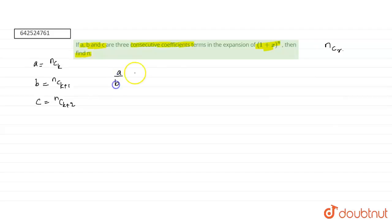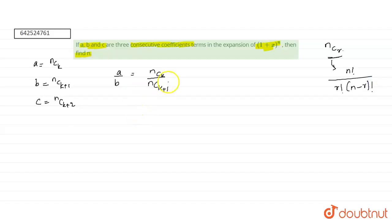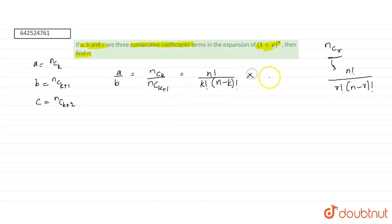Now, if we take a/b, that is nCk divided by nC(k+1). The expansion of nCr is n! divided by r! times (n-r)!. So nCk = n! divided by k! times (n-k)!. And nC(k+1) comes in the denominator, so taking its reciprocal to the numerator, we get k+1 factorial times (n-k-1)! in the numerator and n! in the denominator.